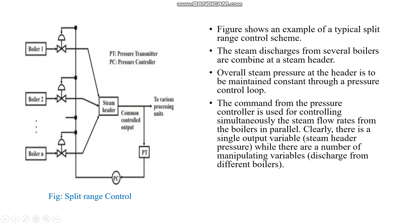That means there are n number of manipulated variables and one control variable. The PT is the pressure transmitter and PC is the pressure controller. This figure shows a typical example of split range controller.